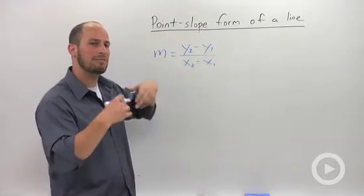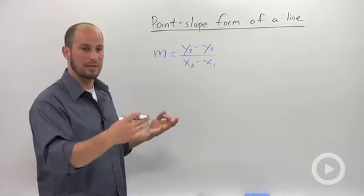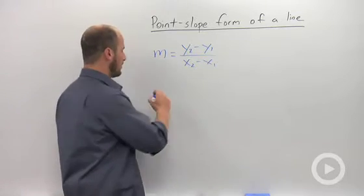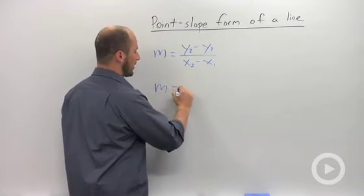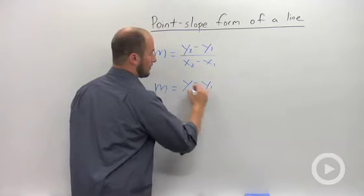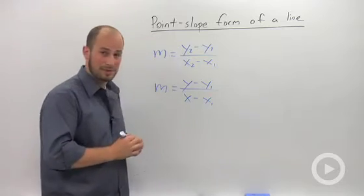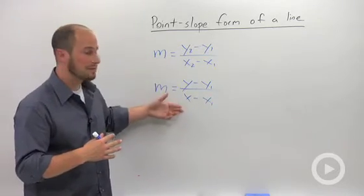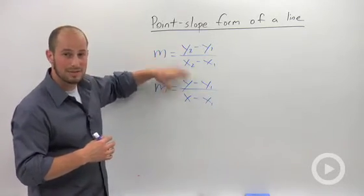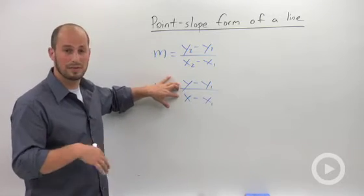What we could do is actually replace one of those points with a new point. Just drop the subscripts. So we could actually say that this is the same thing as m equals y minus y1 over x minus x1. Same exact equation, but instead of having the y2 and x2, we just drop the subscripts and this is a new set of points.